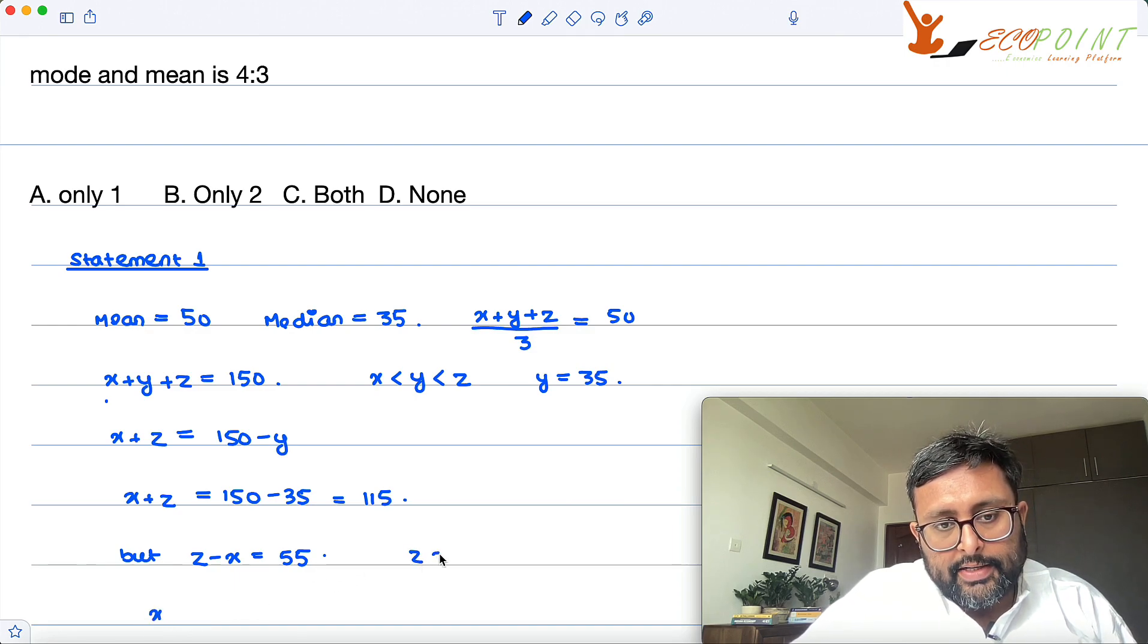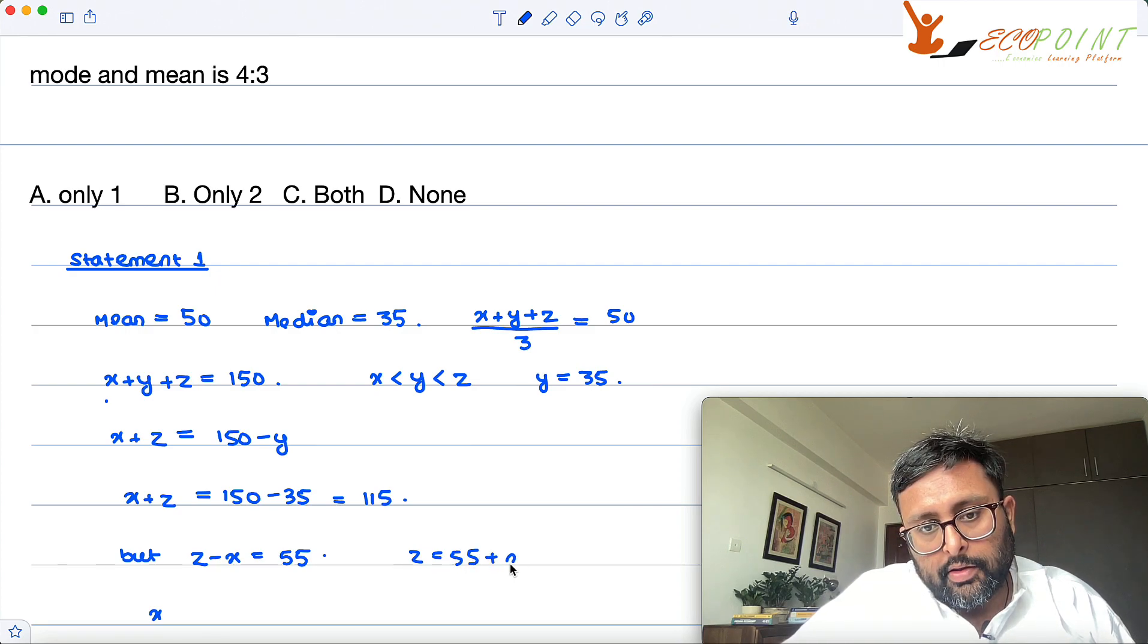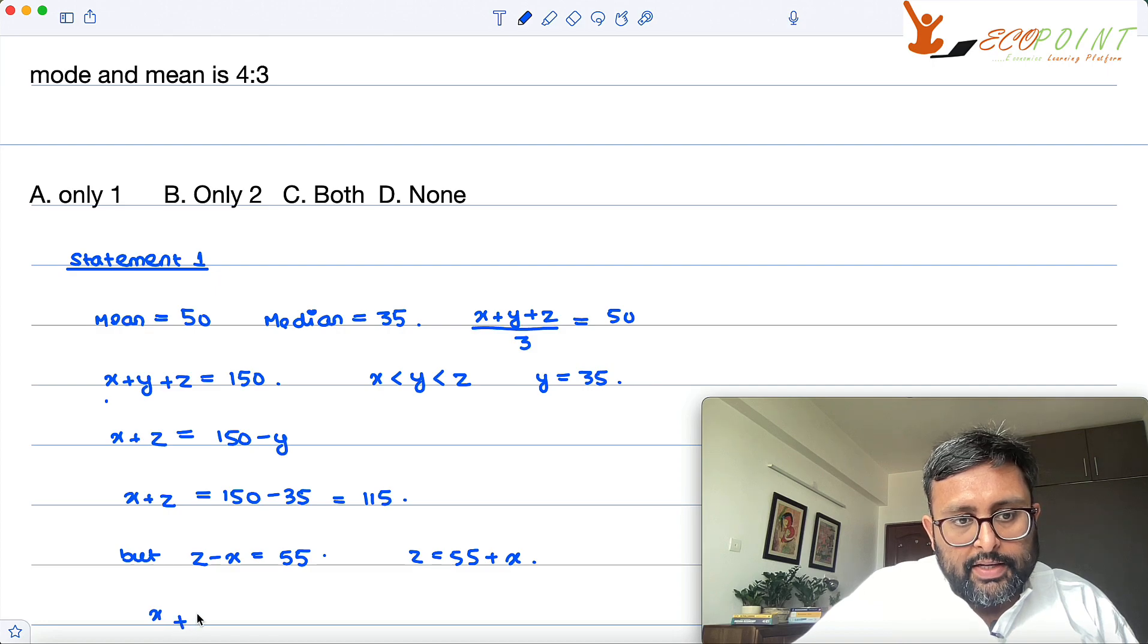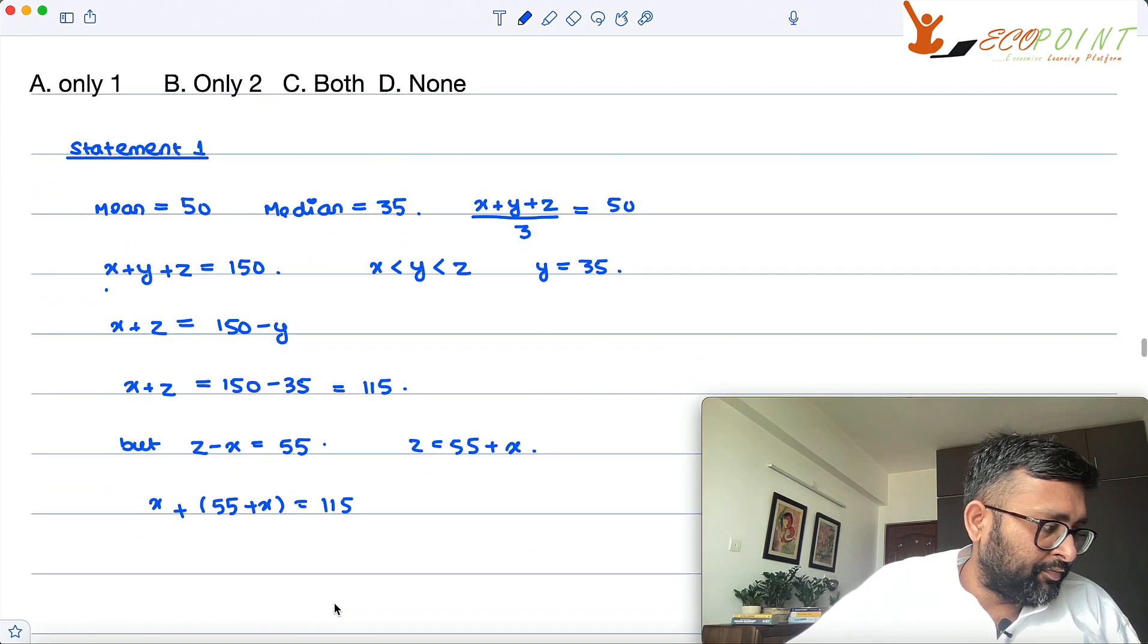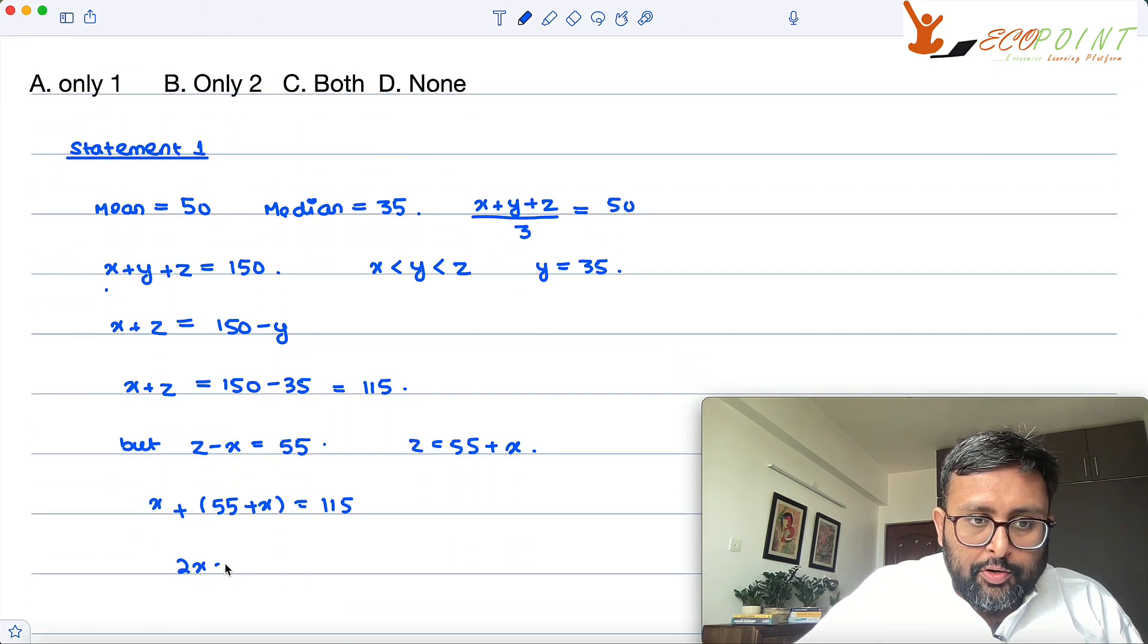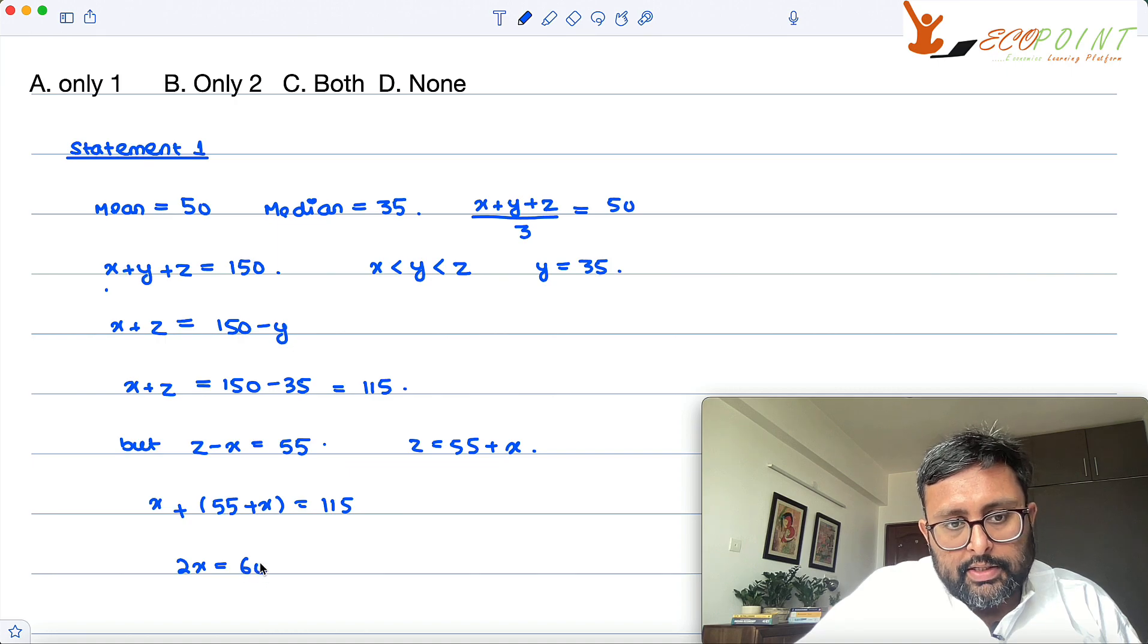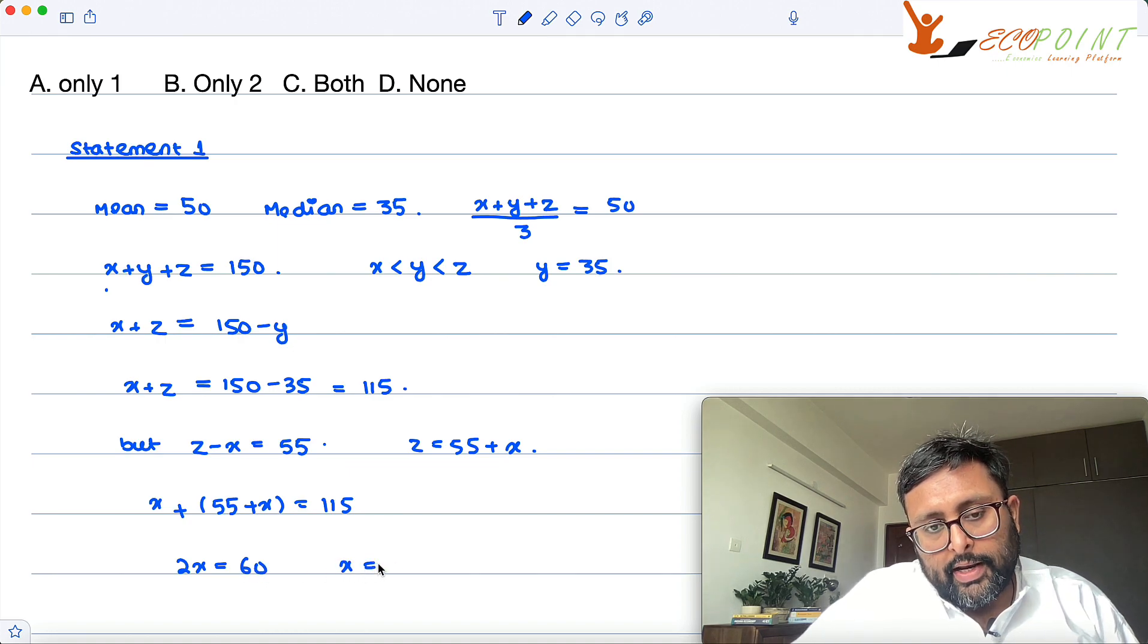So from here I can write z as 55 plus x, okay? So in place of z here I can write here 55 plus x equals to 115, right? So this is going to give me 2x is equal to 60 or x is equal to 30, right?